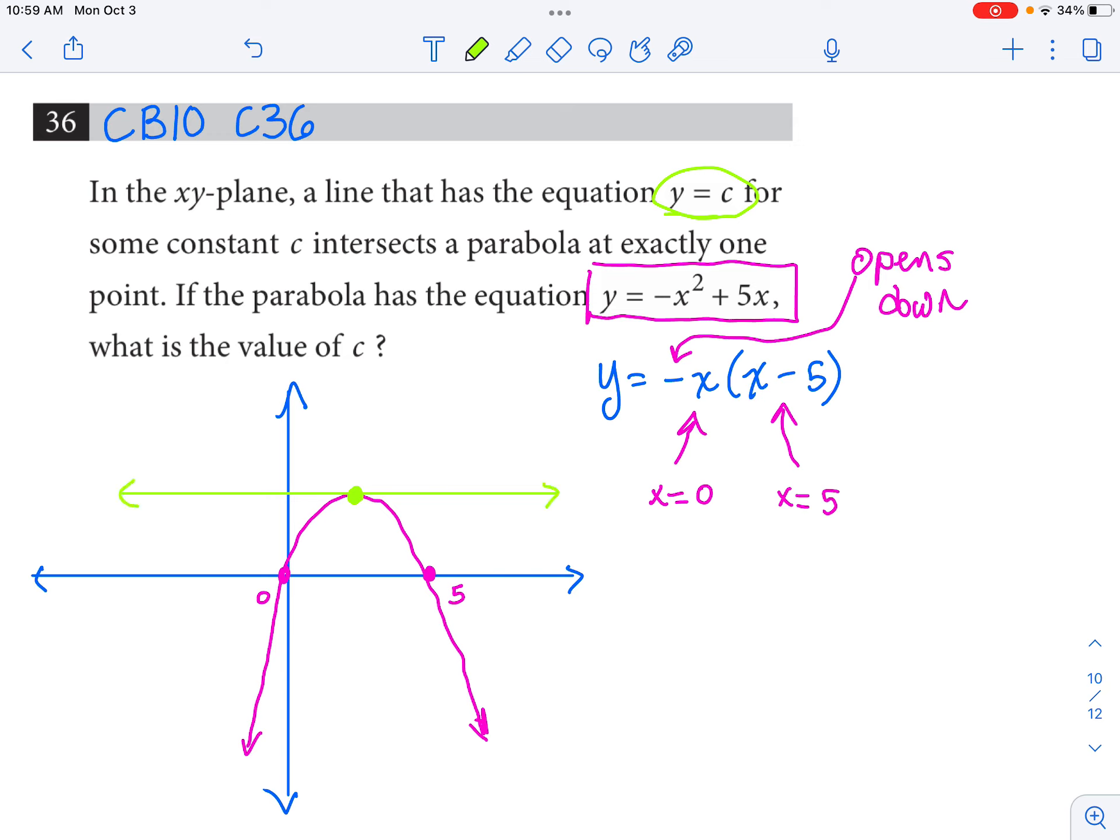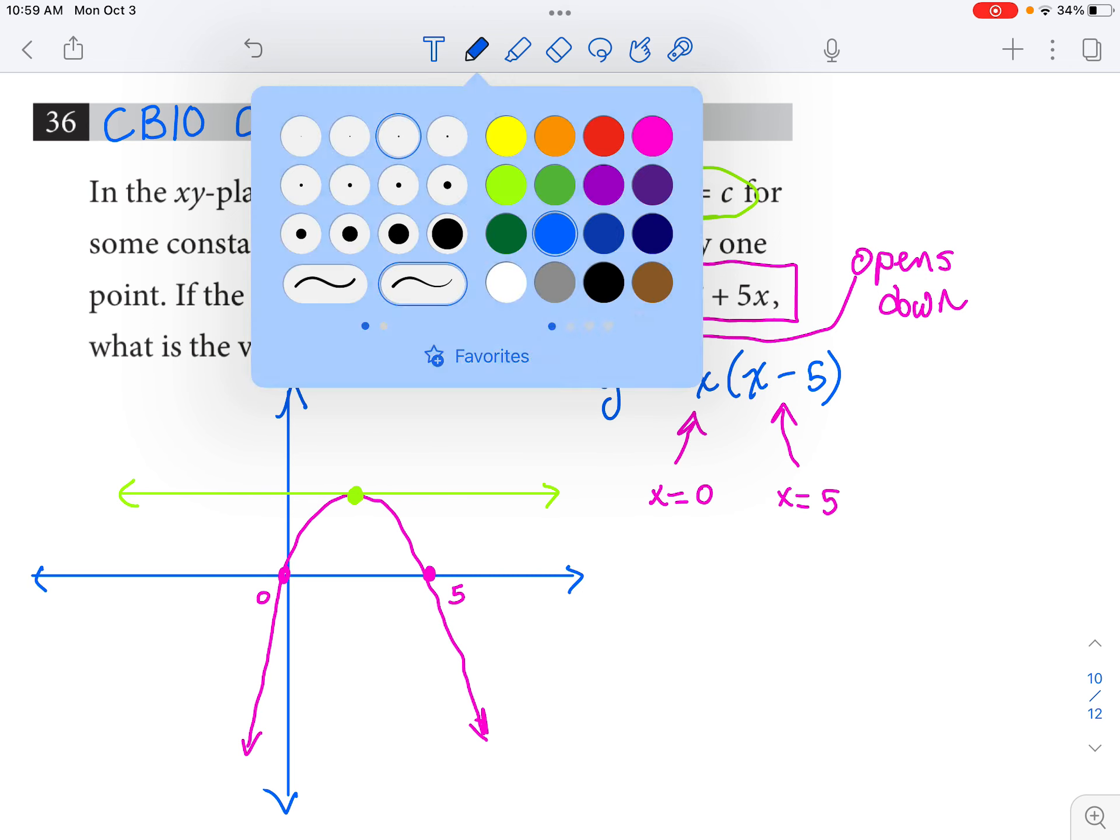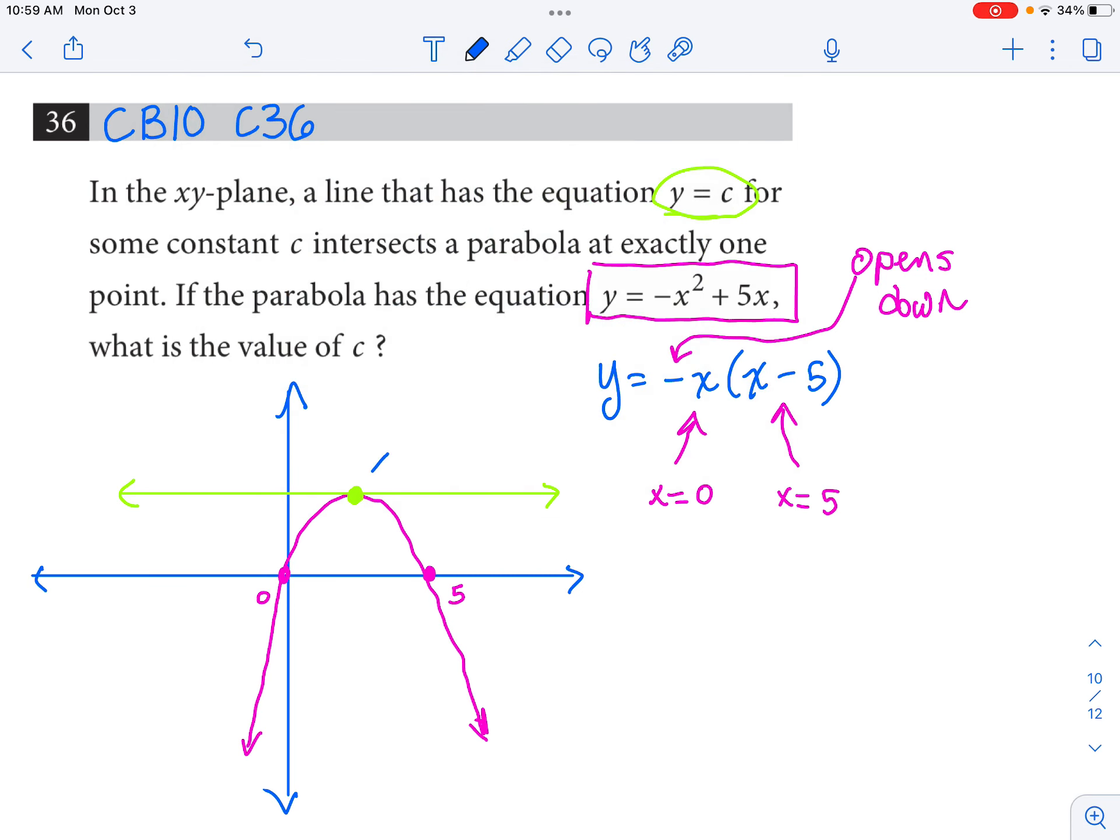So if we could find the h comma k of this vertex, that k value that you are familiar with from your Algebra 2 class, that k value kind of matches up with the c value that they're talking about here. It's the y value. This y equals c is the same thing as writing y equals k, but in your math class you probably called the vertex of a parabola h comma k. So y equals c is what they used, y equals k is what you would use at Fremd. Same idea.